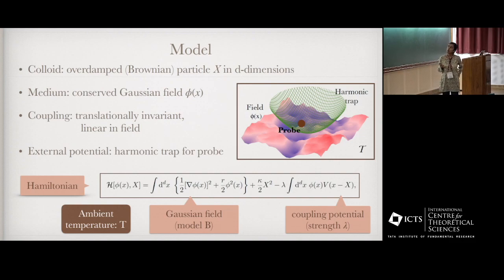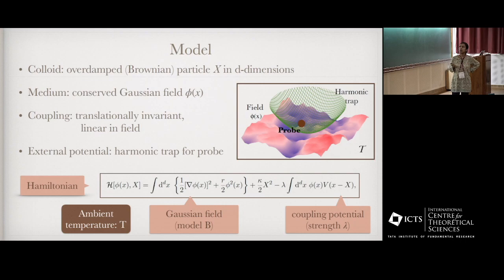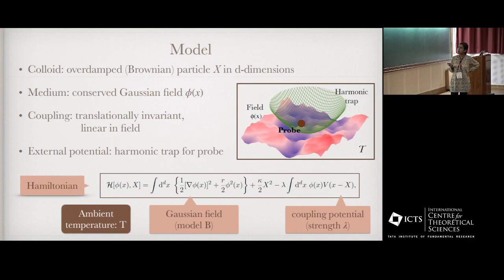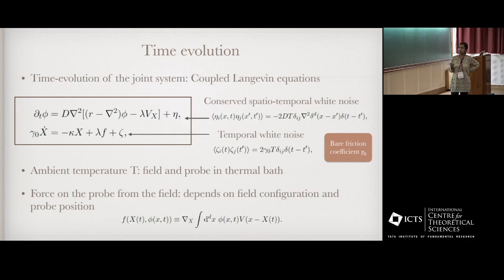I'm going to address this in a very simple model: a probe particle coupled to a Gaussian field. The colloid is modeled by an overdamped Brownian particle in d dimensions — X is the position of the colloid — and the medium is modeled by a conserved Gaussian field. The coupling is taken to be translationally invariant and linear in the field. There is also an external potential; for simplicity we take a harmonic trap. This is the Hamiltonian of the system: the Gaussian field term, the quadratic trap, and the coupling potential, all immersed in a thermal bath at temperature T.